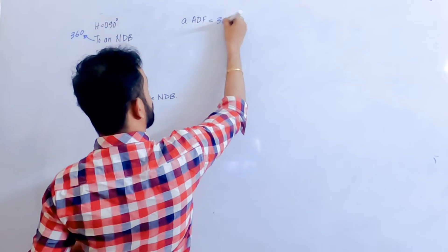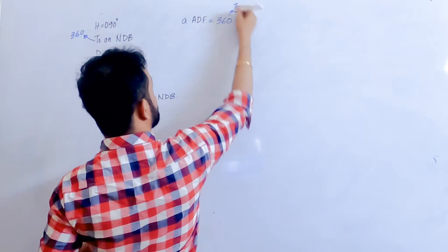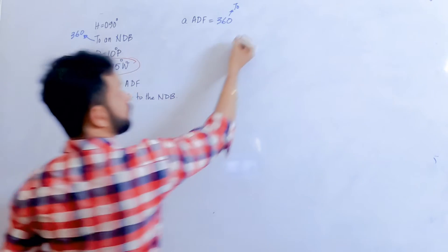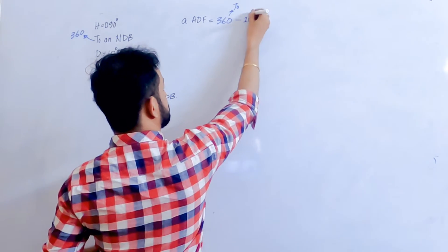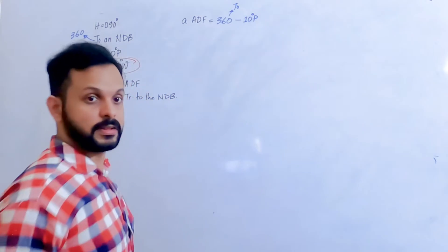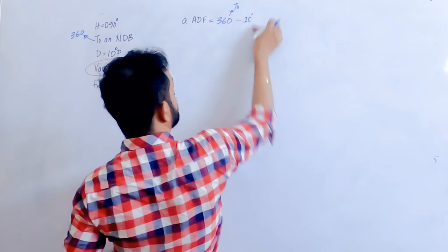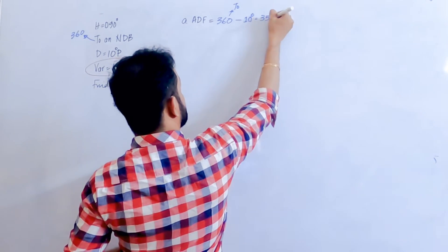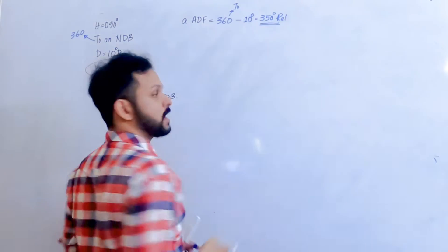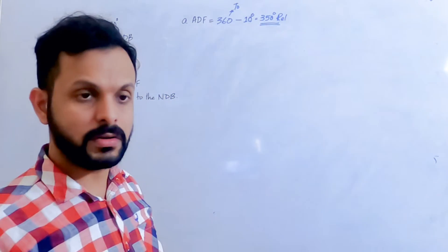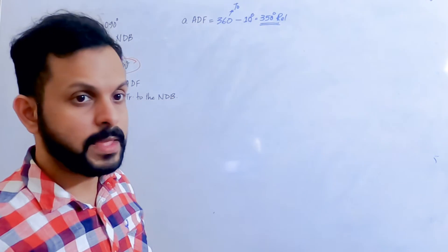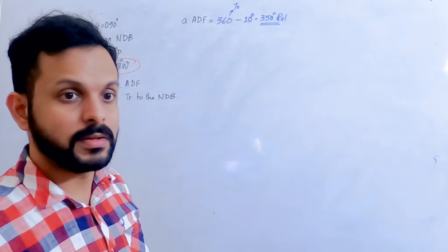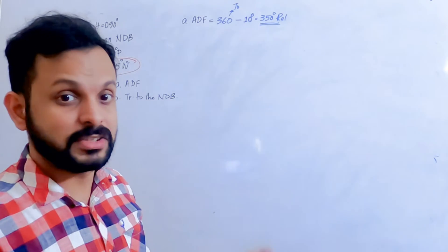360, because you are moving to a station. Since it is 10 degrees of port drift, it should be subtracted. So the answer is 350 degrees relative — that is your ADF indication. Do you need variation here? It's not required — it's relative, so it doesn't matter. We don't need variation; that is the reason why we don't need it.